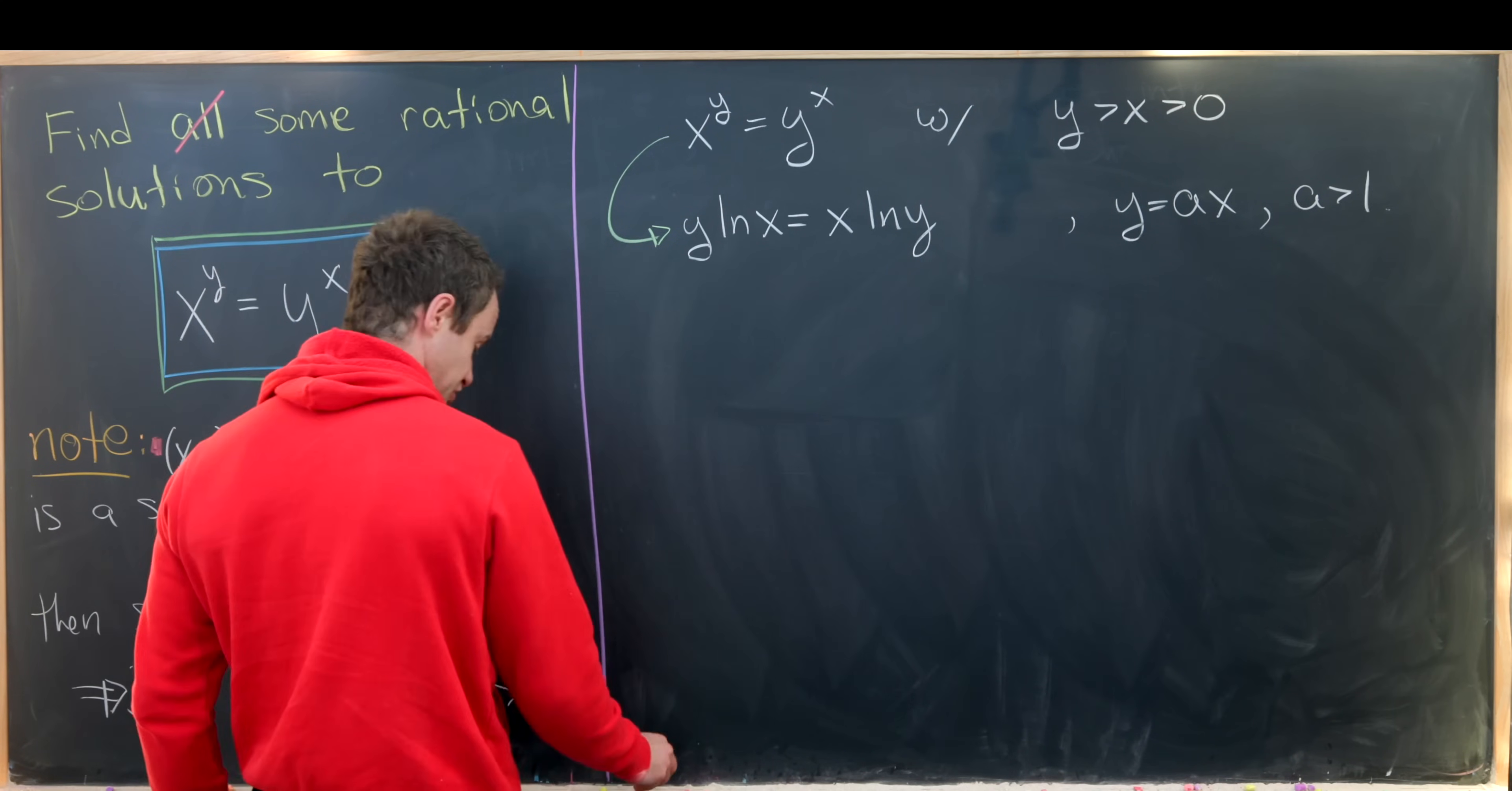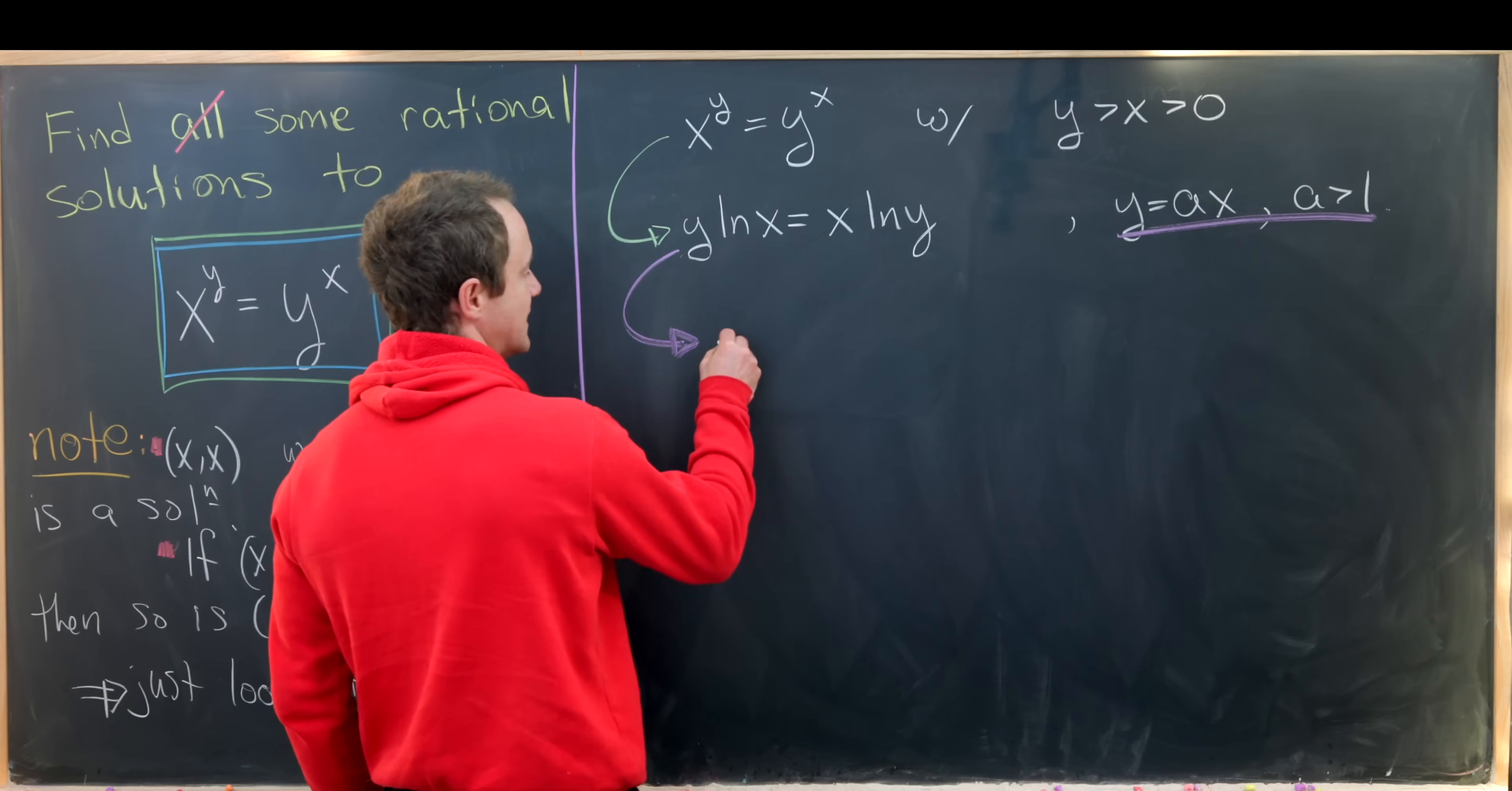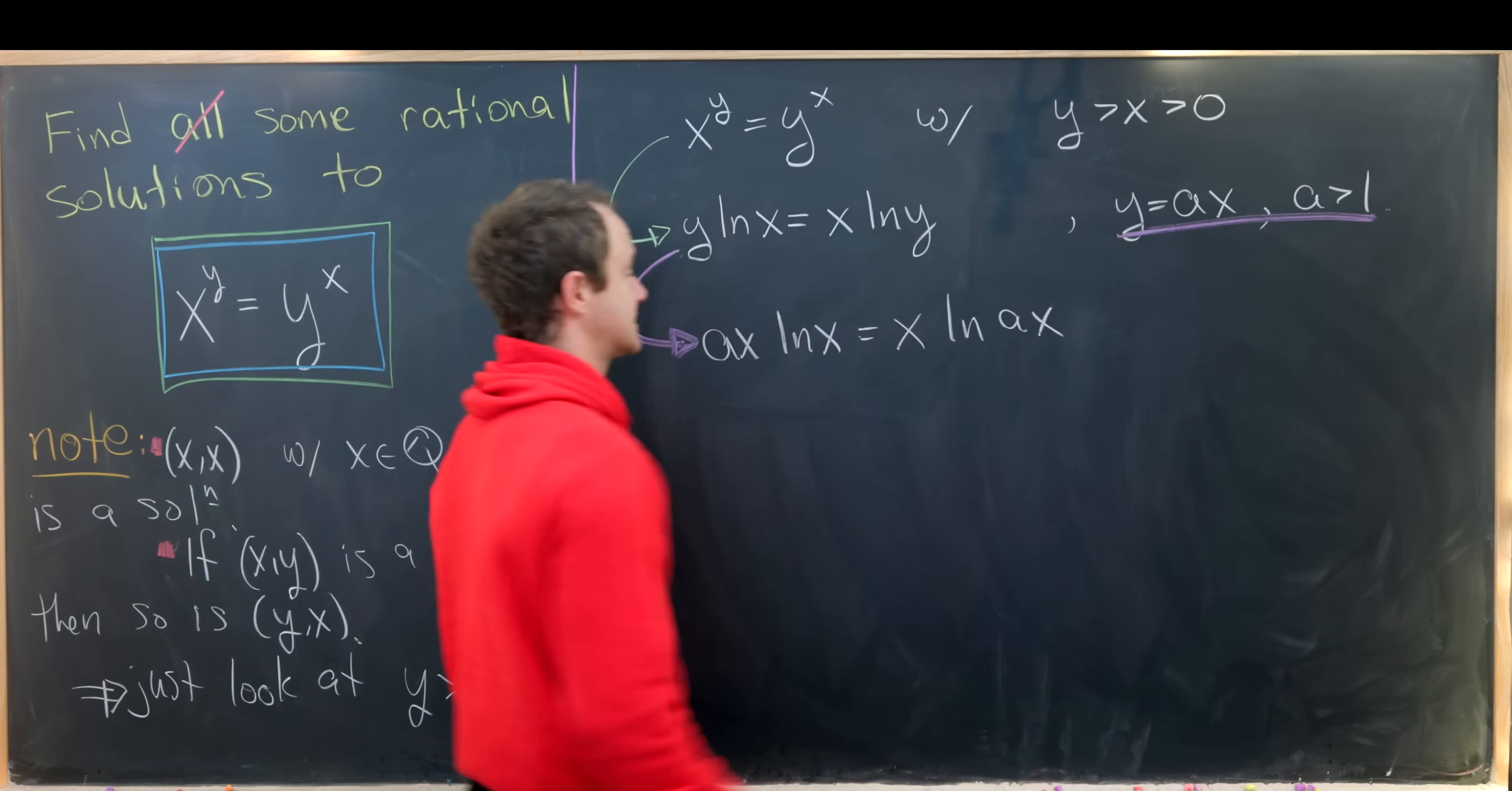So now let's plug that into our equation. So let's maybe have a purple arrow and we'll underline this in purple so that those are linked. And we'll see that we have ax natural log of x equals x times the natural log of ax like that.